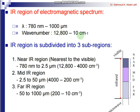Infrared spectroscopy also gives information about the functional groups present in a molecule. The IR region of the electromagnetic spectrum ranges from 780 nm to 1000 micrometers, or 12,800 cm⁻¹ to 10 cm⁻¹. The IR region is divided into three sub-regions: mid-infrared, near-infrared, and far-infrared. The far-infrared is close to microwave, and the near-infrared is close to the visible spectrum.